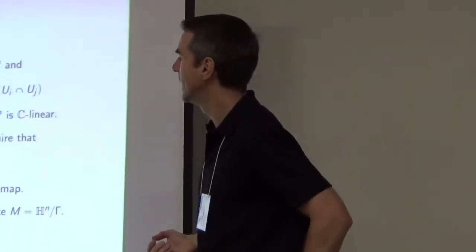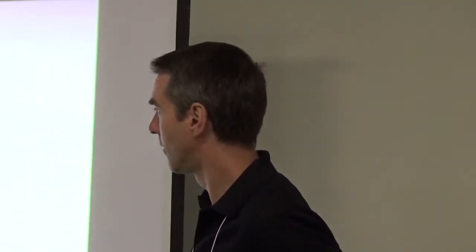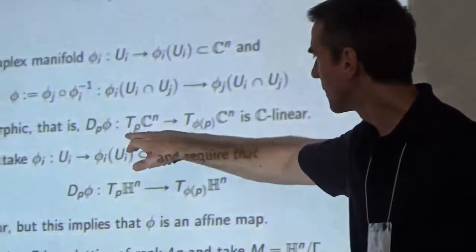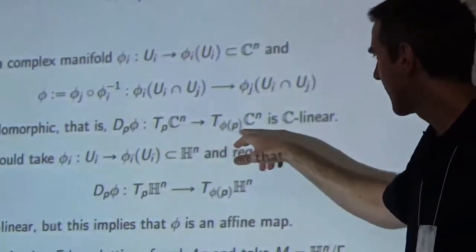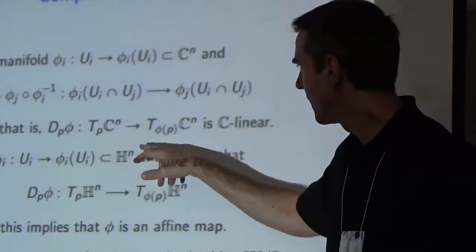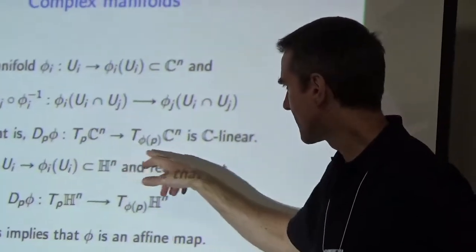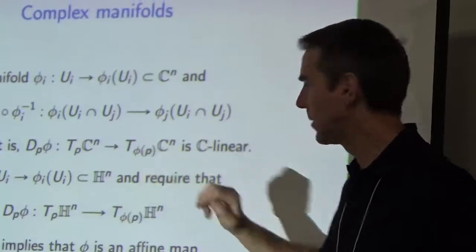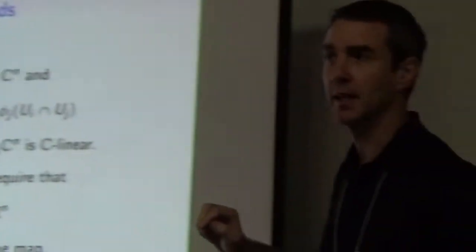What does holomorphic mean? If you look at the Cauchy-Riemann equations, what they're really saying is that if you take the differential of your map — from a tangent space to another tangent space — these are vector spaces, and you want this map to be complex linear. That's exactly what the Cauchy-Riemann equations are if you write them out.